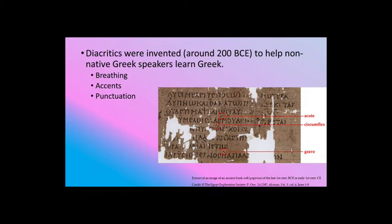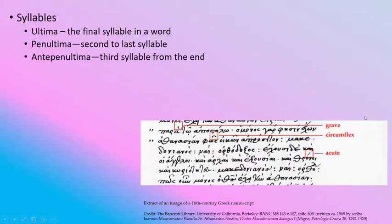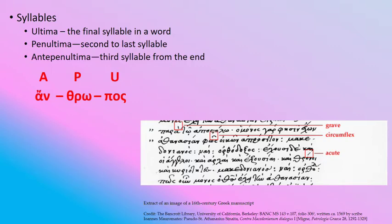Here we have a papyrus that shows the ancient book role with different things marked in — there's an acute, a circumflex, and a grave. Just to make sure we're all good on the basics: there are three different syllables that matter for accentuation. There's the last syllable, the final syllable, which we call the ultima. One before that is the penultima — the almost ultima, our second-to-last syllable. And then the one before that is the anti-penultima. We'll use shorthand A, P, and U for those going forward.